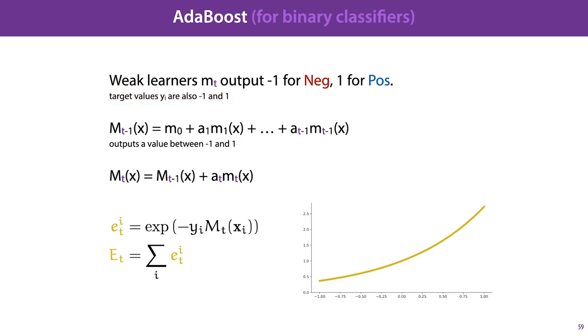As before, we compute the output of the model ensemble at iteration t minus one as a weighted sum over all the models we've trained so far. Since this is a weighted sum, this outputs a value between minus one and plus one. And we will take these values as fixed. So once they've been chosen, we won't backtrack to change them anymore.